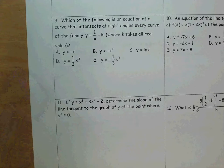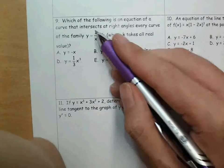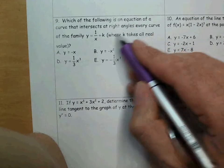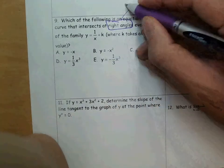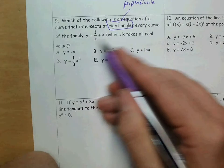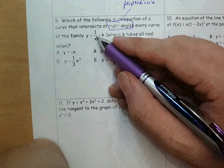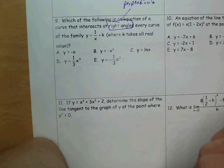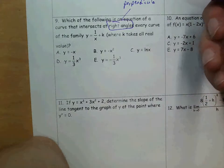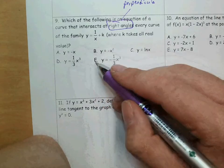Number 9 — number 8 was one of the harder ones. Number 9 says: which of the following is an equation that intersects at right angles — meaning perpendicular — to every curve in this family? So we want to find a curve that is perpendicular to this. We need the slope of the tangent line, and the negative reciprocal of that should always be the slope of the perpendicular function.